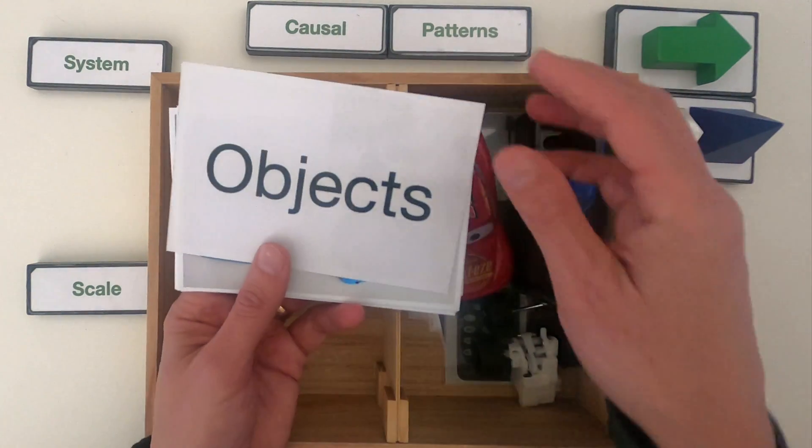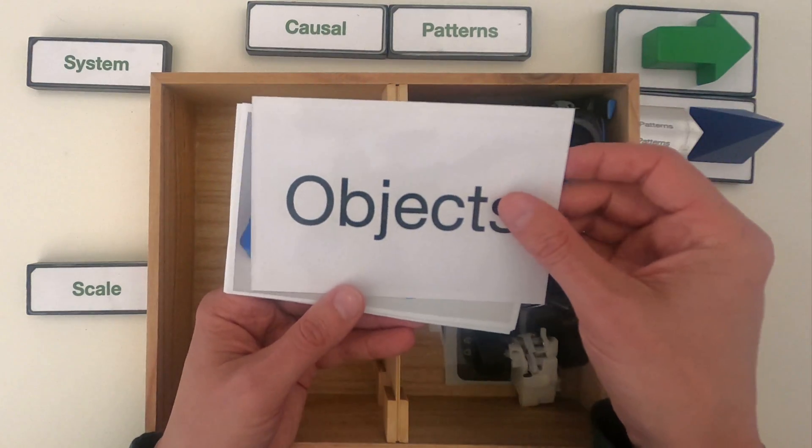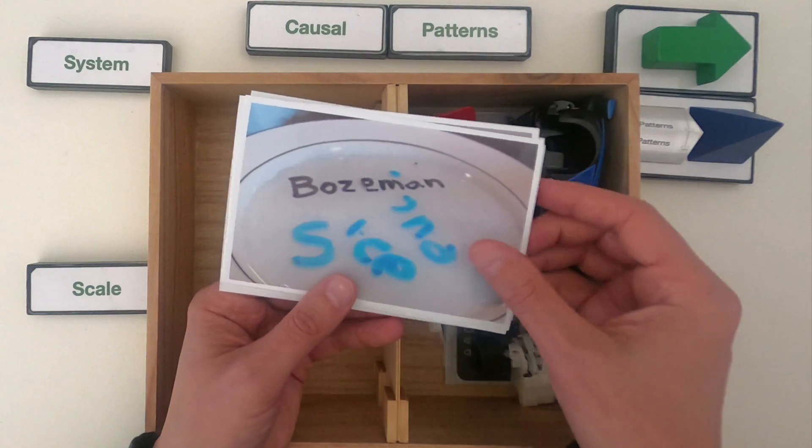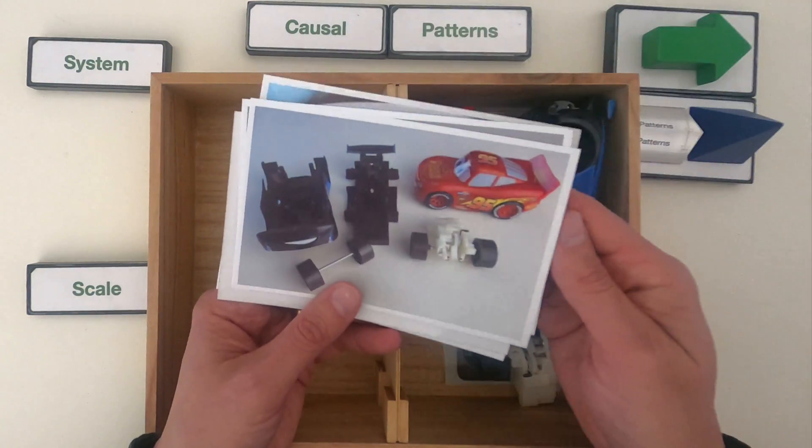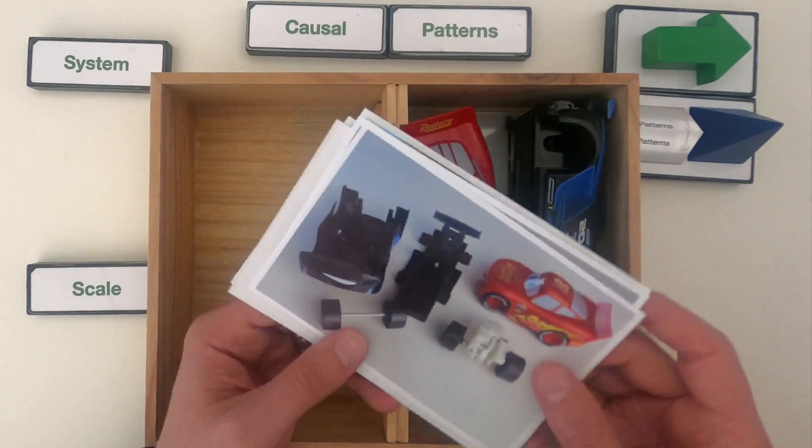By the end of watching this video, you should be able to identify scale causal patterns in something like an old school tape recorder or a little chemistry demo. But I'm going to start by showing you my thinking when it comes to this little pullback toy.